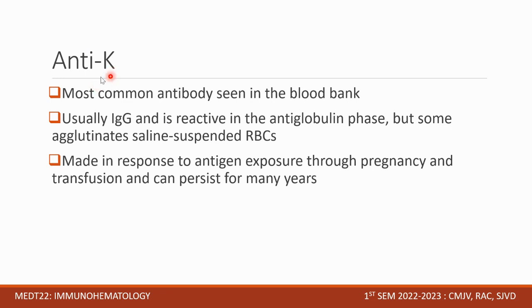Anti-K (big K) is the most common antibody of the Kell blood group system seen in the blood bank. It is usually IgG and is reactive in the antiglobulin phase, but some agglutinate in saline-suspended RBCs. It is made in response to antigen exposure through pregnancy and transfusion, and can persist for many years. It is not naturally occurring — just like the Rh antibody, it is made in response to exposure.